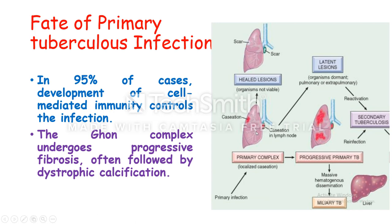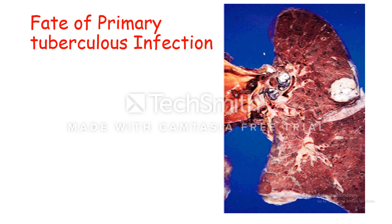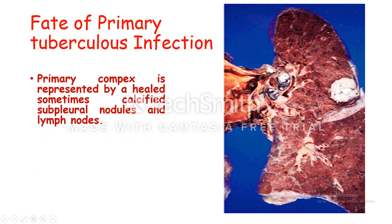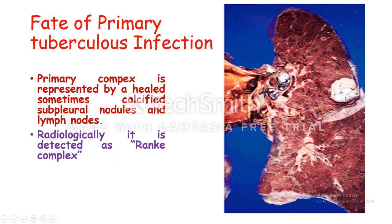Here you can see the primary complex: there is the caseation necrosis and the enlarged lymph node. In 95% of cases the lesion heals, giving a scar in place of the Ghon focus and a scar in the lymph node. The lesion becomes fibrosed and calcified — we call it the Ranke complex. You can see the place of the Ghon focus become calcified, and it appears radiologically as the Ranke complex: calcified Ghon focus and calcified lymph node. This gives the impression of remote tuberculosis infection.